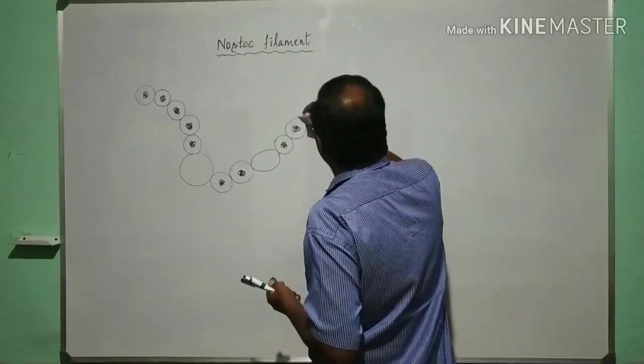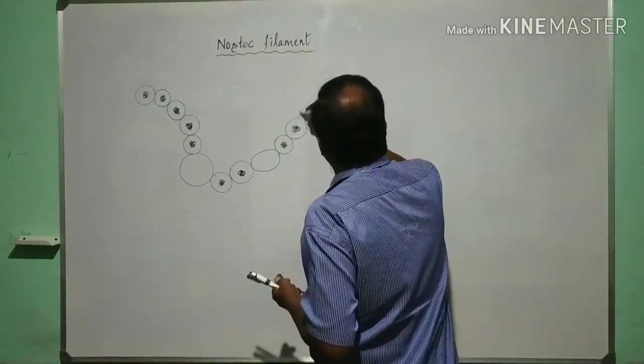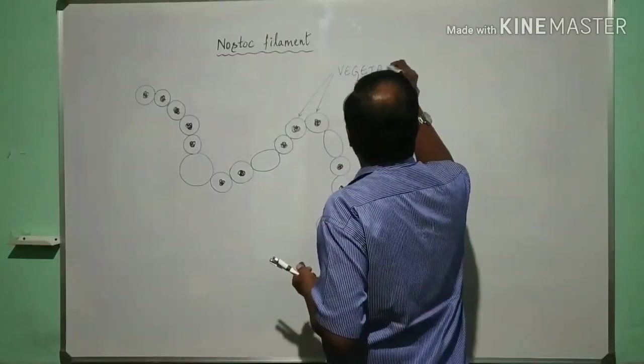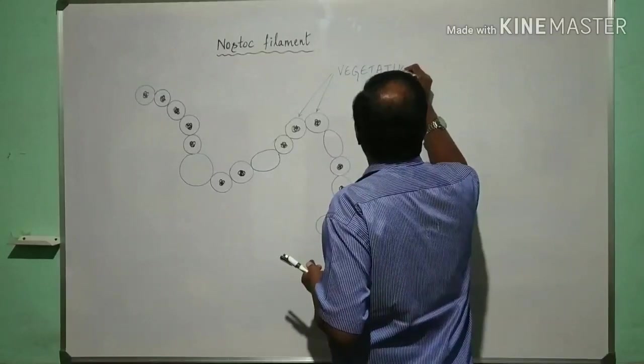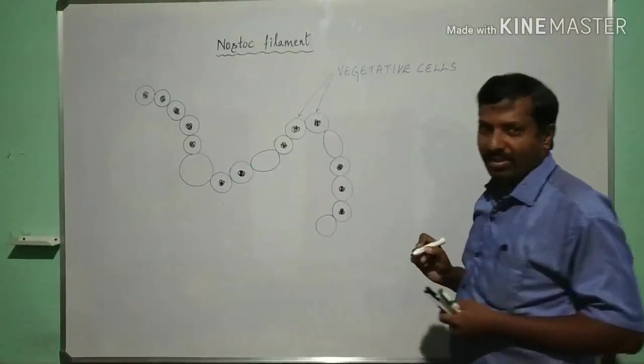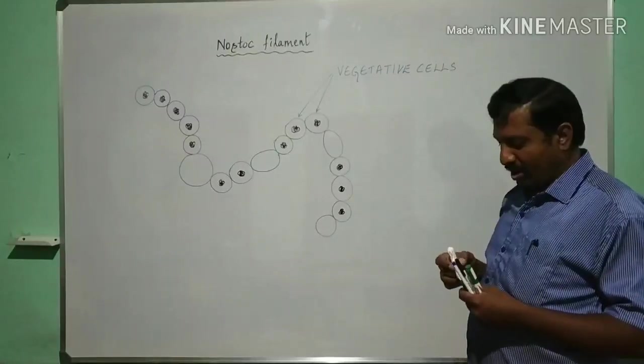And here, these cells are called vegetative cells which have some photosynthesis.